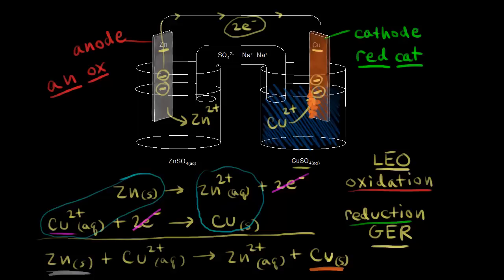Let's also think about the salt bridge. We have sulfate anions in the salt bridge, and anions migrate to the anode. We also have sodium cations, and cations migrate to the cathode. That makes it easy to remember what's happening in the salt bridge.